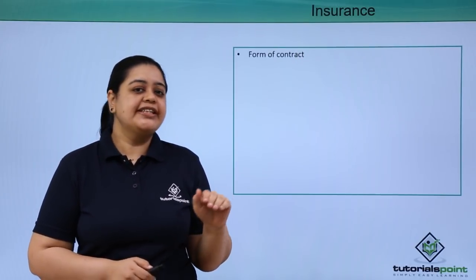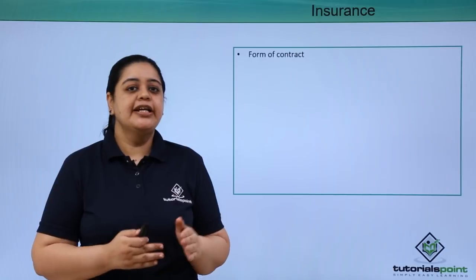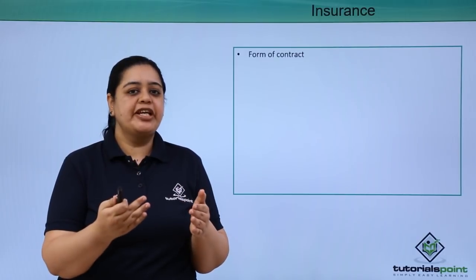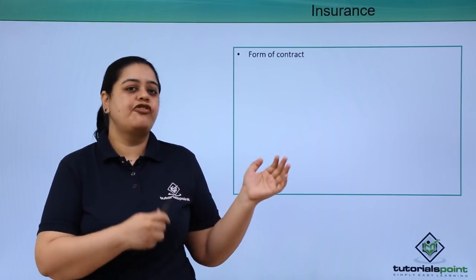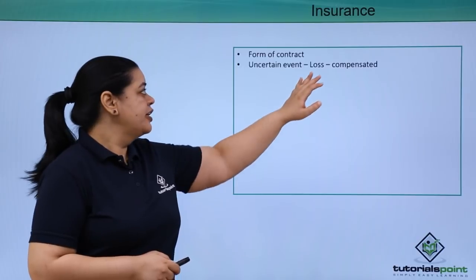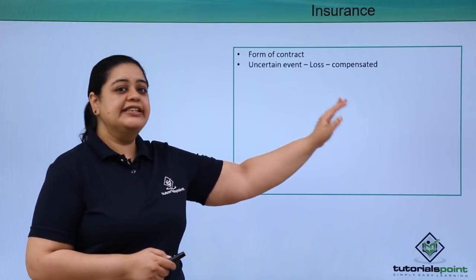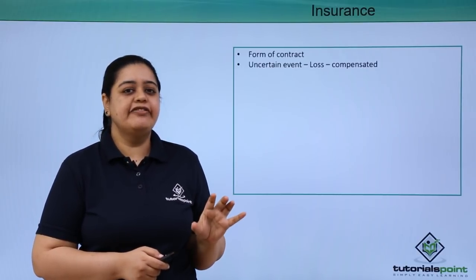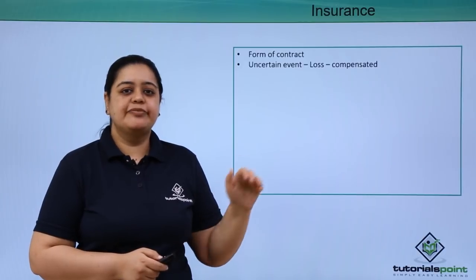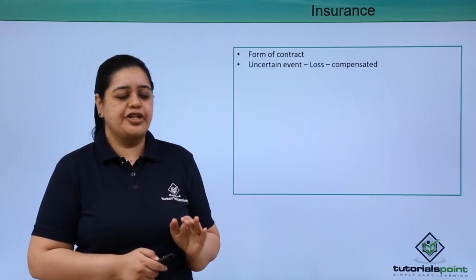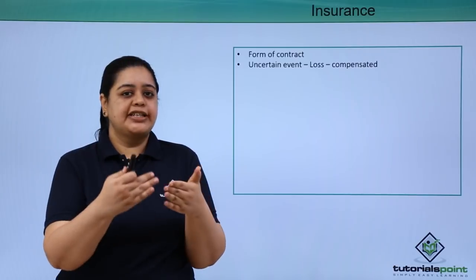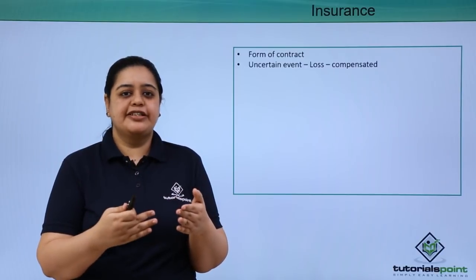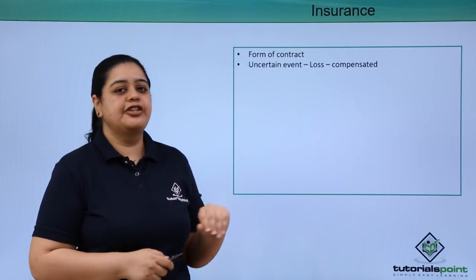Insurance is a form of contract. Two competent parties who are able to make a contract among themselves will come together and form a contract of insurance. Insurance is about getting compensated for an uncertain event — if there is a loss because of an uncertain event, compensation is given to the person who has taken the insurance. For example, if I have goods in my warehouse and there is a fire causing the goods to get destroyed, I will get compensated for that loss.